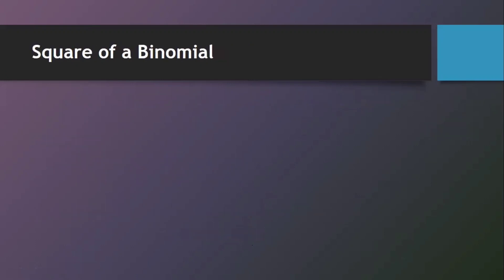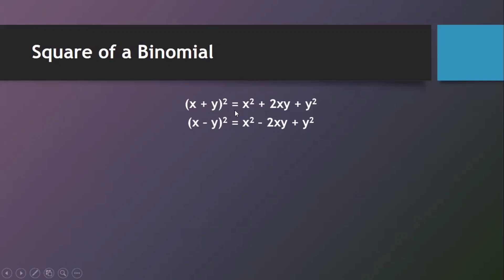Let's now proceed to the second special product: the square of a binomial. For the form (x plus y) squared, the product equals the square of the first term, plus twice the product of the first and second terms, plus the square of the last term. For (x minus y) squared, the middle term becomes minus twice the product of the first and second terms. Both forms are equivalent to multiplying the binomial by itself.